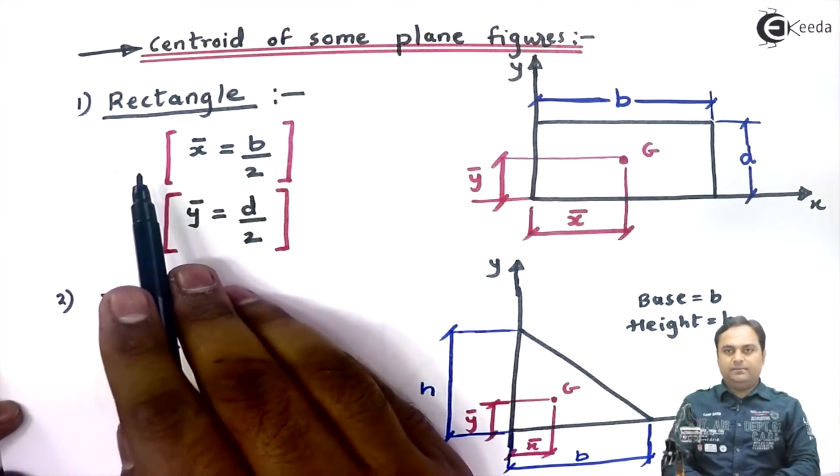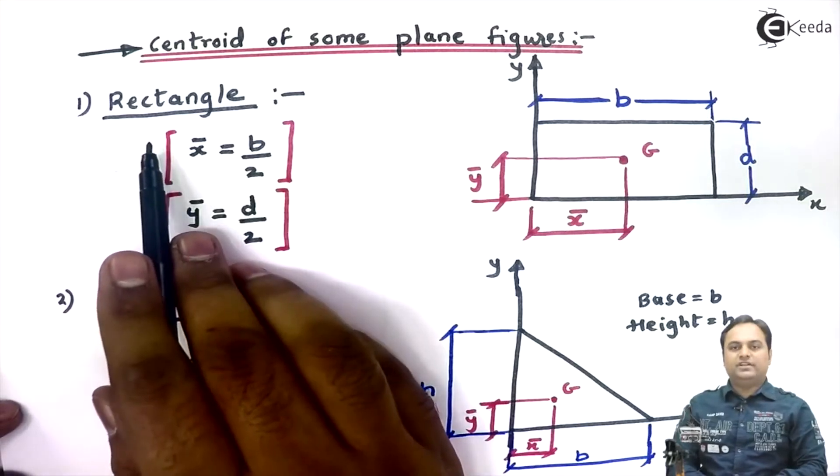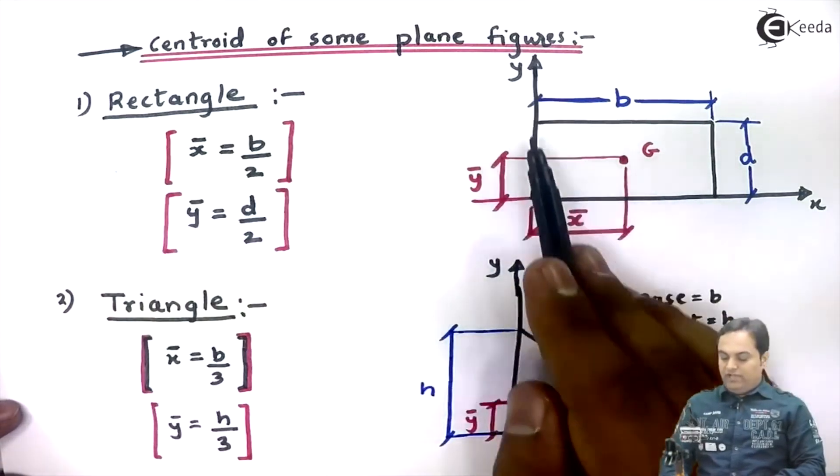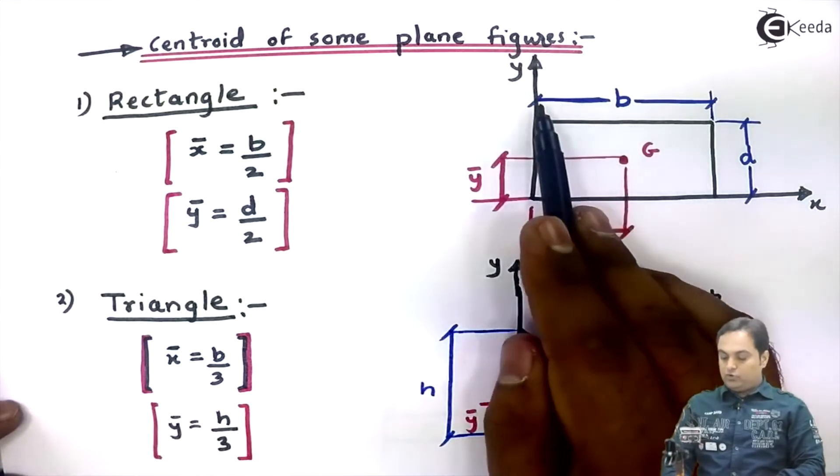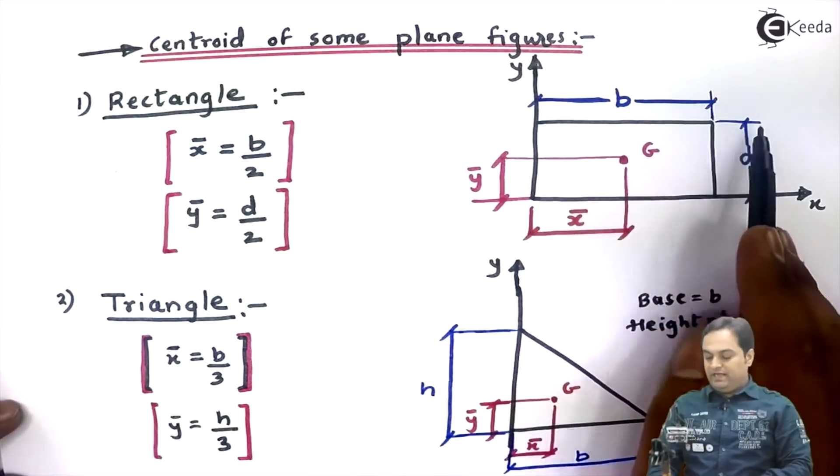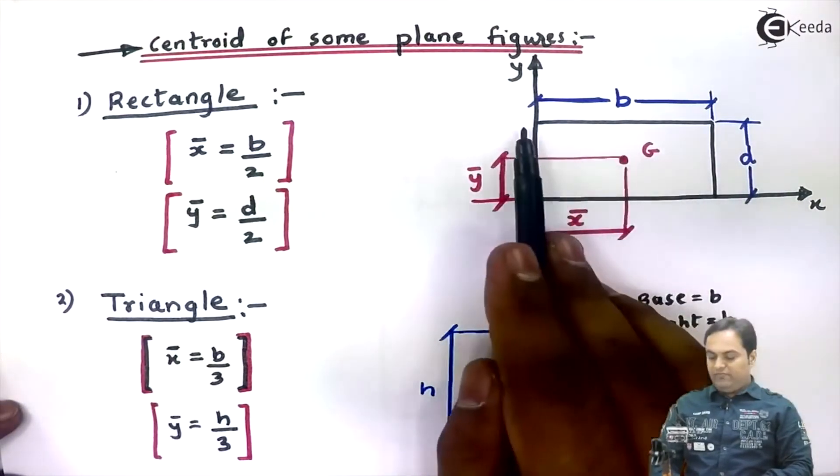The first one is rectangle. Now if we have a rectangle whose width is B and height is D, for a rectangle, centroid is located at the intersection of the diagonals.